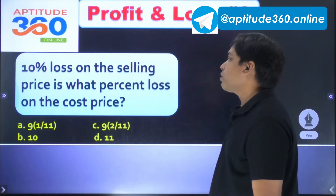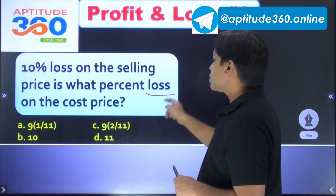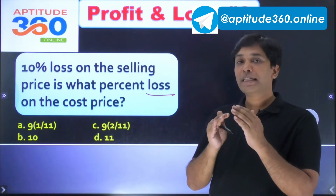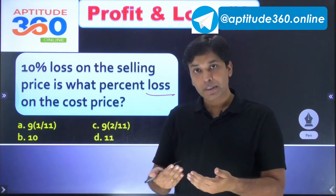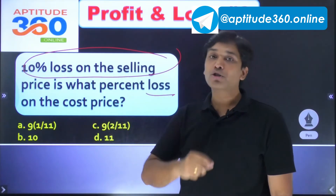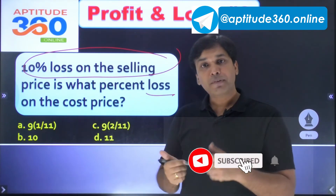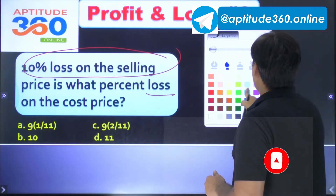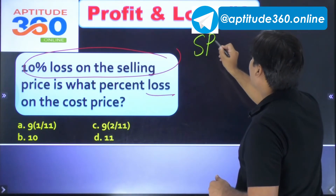Let us solve this next problem: 10% loss on the selling price is what percent loss on the cost price? I specifically told you that profit and loss percentages are found on cost price. But this problem says there is a loss of 10% on the selling price. So I take selling price as 100 rupees.